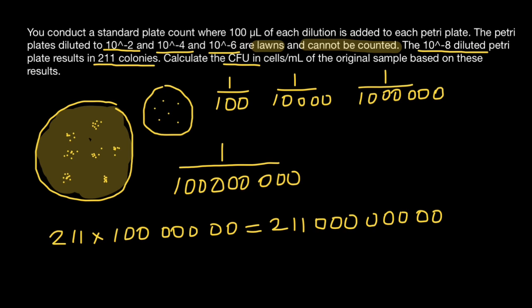So what is the number? Let's take a look. This is going to be 21 billion bacteria in original sample. But this is not our final answer because our question is, calculate the CFU in cells per milliliter.